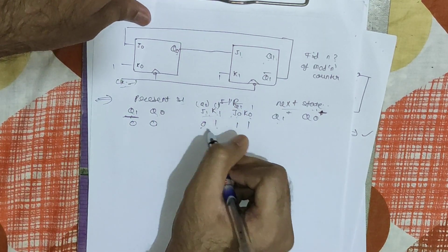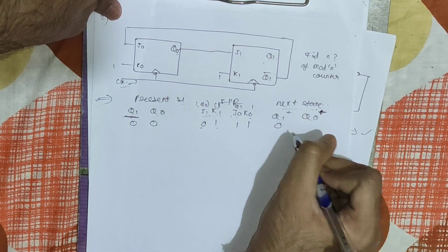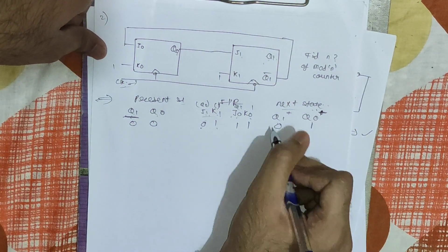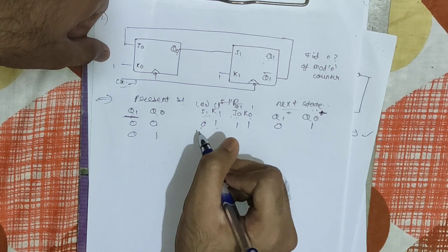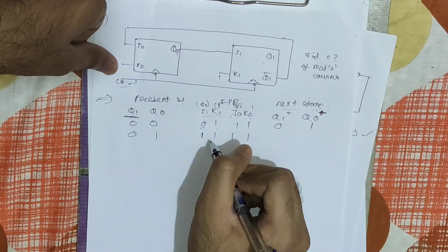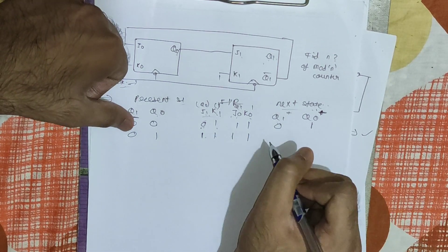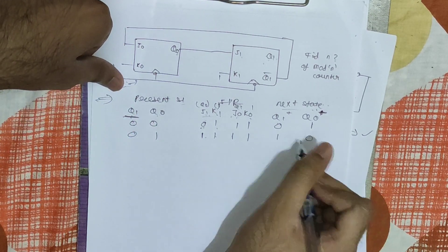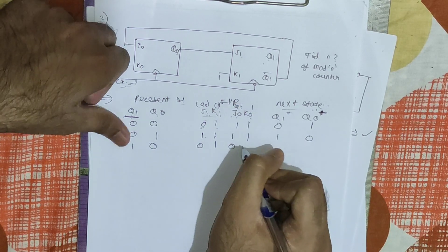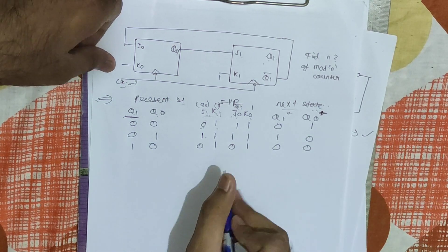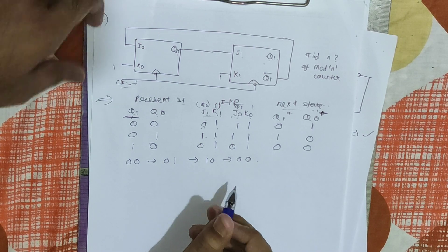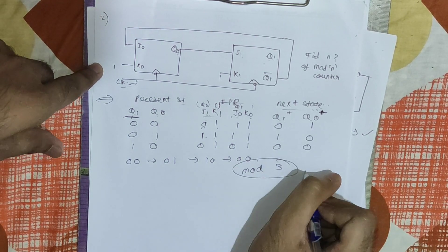For state 00 with J1=0, K1=1, the JK flip-flop is in reset condition so Q1 stays 0. With J0=1, K0=1, the JK flip-flop toggles so Q0 becomes 1. Next state is 01. For state 01: J1 = Q0 = 1, K1 = 1, so JK toggles giving Q1 = 1; J0 = Q1-bar = 1, K0 = 1, so Q0 toggles to 0. Next state is 10. For state 10: J1 = Q0 = 0, K1 = 1, reset giving Q1 = 0; J0 = Q1-bar = 0, K0 = 1, reset giving Q0 = 0. Next state is 00. So the counter cycles: 00 → 01 → 10 → 00, counting 3 states. This is a mod-3 counter.